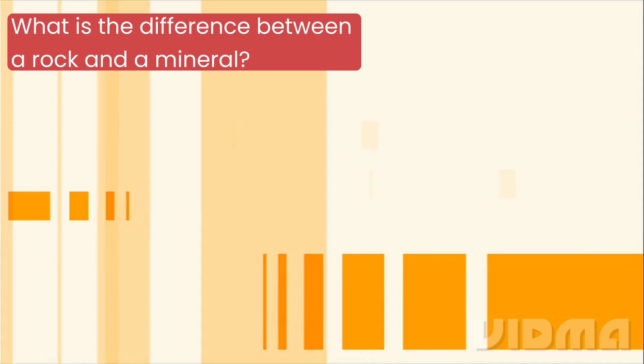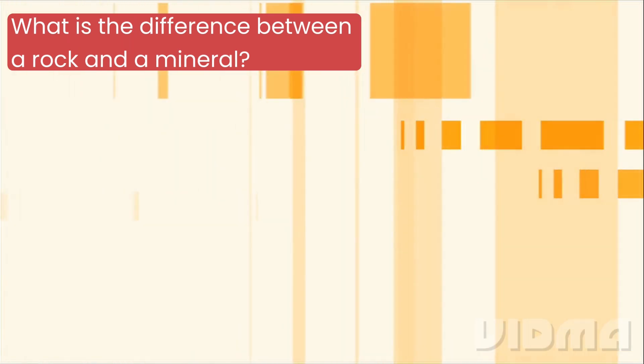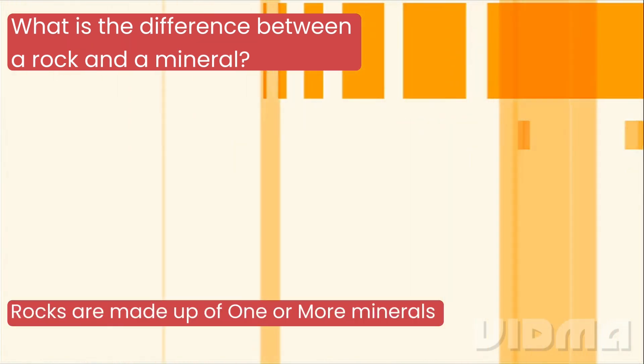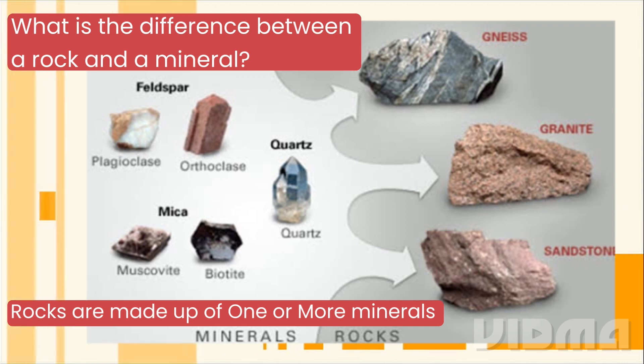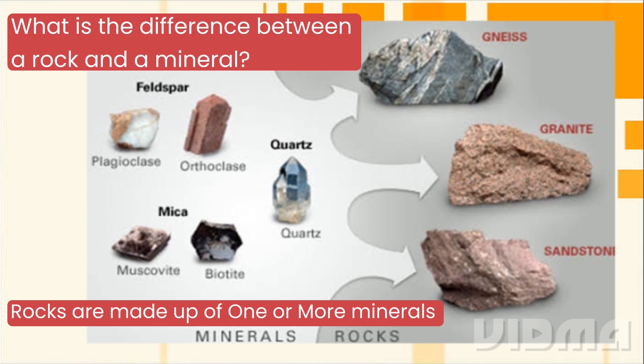Now the second question that arises is, what is the difference between a rock and a mineral? A rock is made up of one or more minerals, but minerals are not made up of rock. That is the difference between them. The rock contains one or more minerals.